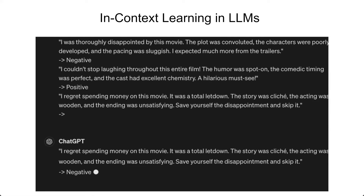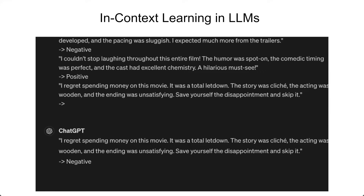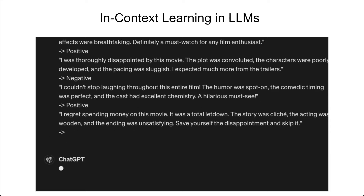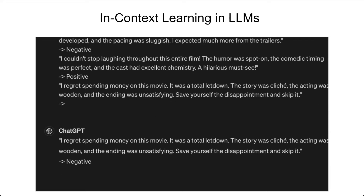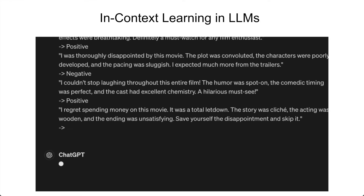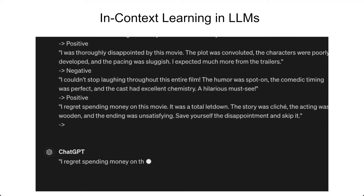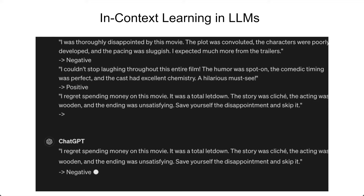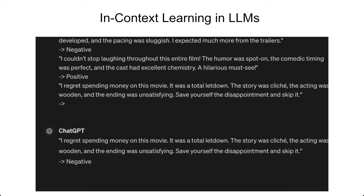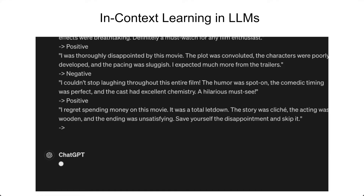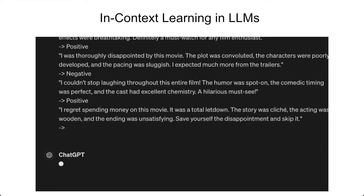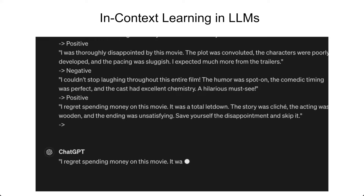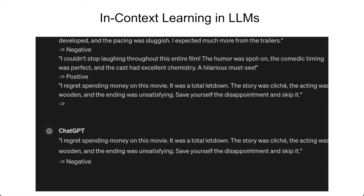In-context learning is a seminal characteristic of large language models. It allows generative language models to do few-shot classification — specifically, classifying text from only a few examples by autoregressively generating the label. In this example, we're classifying the sentiment of movie reviews as either positive or negative by autoregressively generating positive or negative after the text of a movie review.